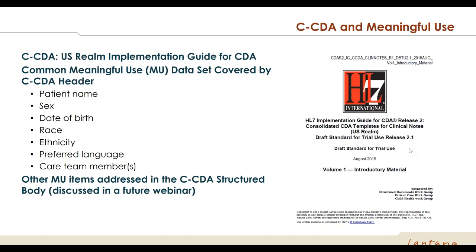Consolidated CDA, or CCDA, is a U.S. Realm Implementation Guide cited under Meaningful Use, and much of what is required under Meaningful Use is covered by the CDA header — patient demographics like patient name, sex, birth date, race, ethnicity, and language — as well as detailed information on care team members. Other Meaningful Use required data elements such as coded vital signs, problems, medications, and allergies will be discussed in a future webinar on the CCDA structured body. This webinar focuses on the document metadata and patient demographic information required under Meaningful Use.